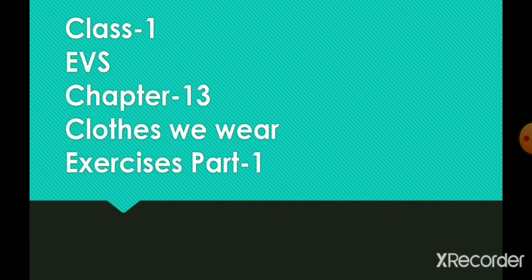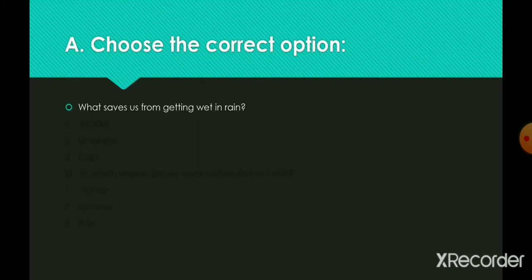Choose the correct option. What saves us from getting wet in rain? 1. Muffler, 2. Umbrella, 3. Cap. The right answer is number 2, Umbrella.